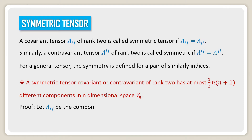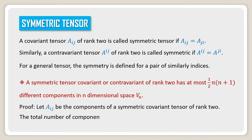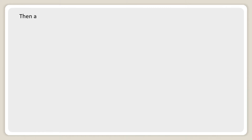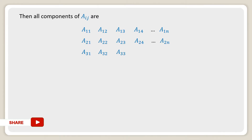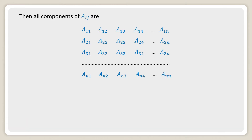Consider a_ij as the components of a symmetric covariant tensor of rank 2. The total number of components of a_ij is n². All components of a_ij are: a₁₁, a₁₂, a₁₃, a₁₄ up to a₁ₙ; a₂₁, a₂₂, a₂₃, a₂₄ up to a₂ₙ; a₃₁, a₃₂, a₃₃, a₃₄ up to a₃ₙ; and so on through the last row.